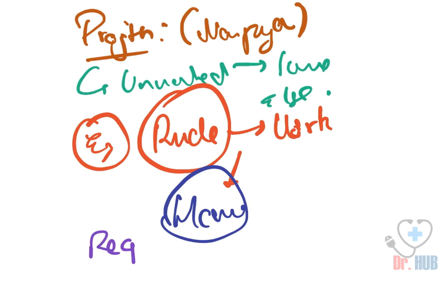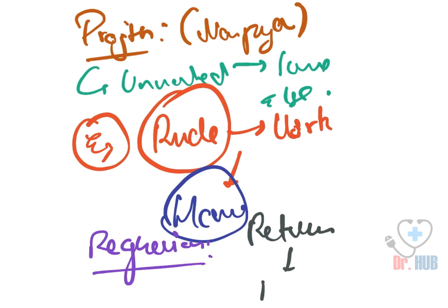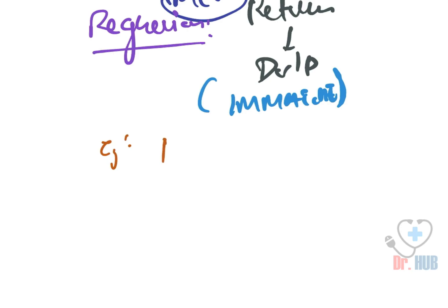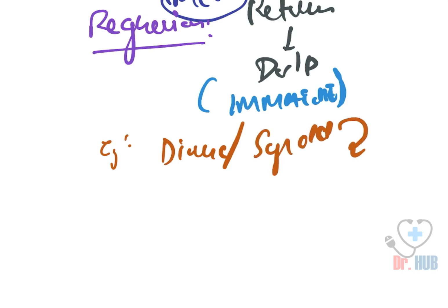Next we look at regression. In regression, there is a return to an earlier state of development, which is the most immature response. An example is: 'Ever since the divorce, my five-year-old has begun to wet the bed.' This is regression — a return to an earlier state of development.